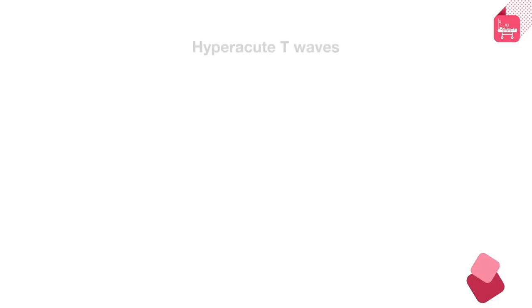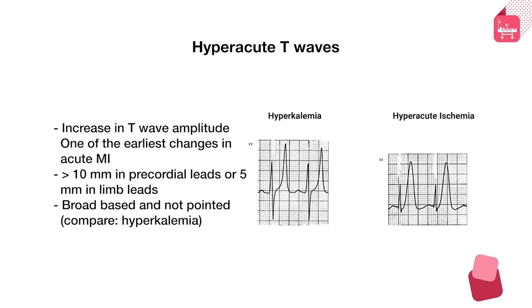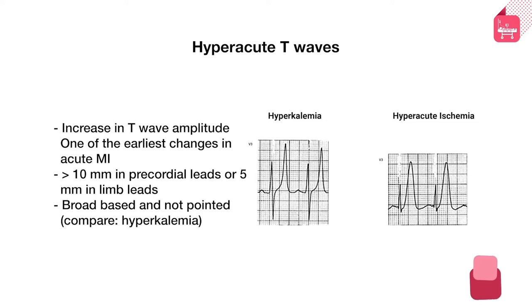Another important T wave finding is hyperacute T waves — where the upright T wave amplitude is exaggerated. This is one of the earliest changes in acute myocardial infarction. While most people are attuned to pick up ST elevation, hyperacute T waves are sometimes missed with potentially disastrous consequences. The T wave in hyperacute ischemia is increased in amplitude and is generally broad-based, not pointed — contrasting with hyperkalemia, where T waves are narrow-based, tall, and tented.